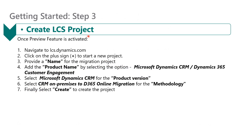Next, create an LCS project once the preview feature is activated. Navigate to lcs.dynamics.com and click on the plus sign to start a new project. Then provide a name for the migration project, add the product name by selecting Microsoft Dynamics CRM / Dynamics 365 Customer Engagement, select Microsoft Dynamics CRM for the product version, select CRM on-premise to D365 online migration for the methodology, and finally select Create to create the project.